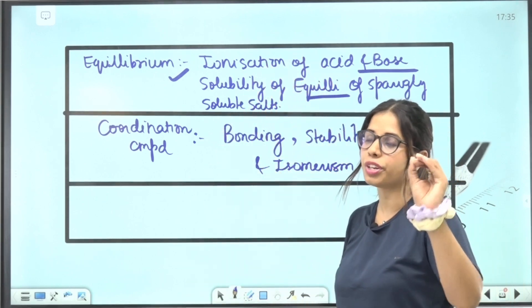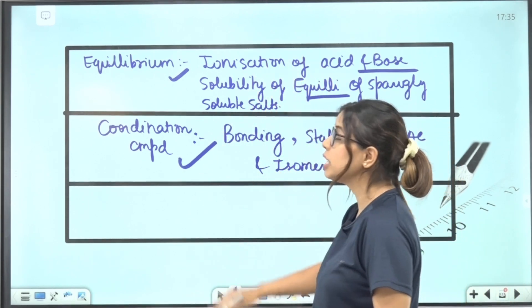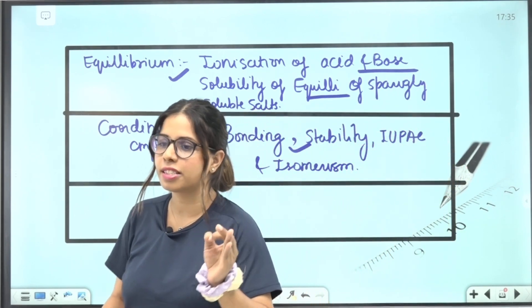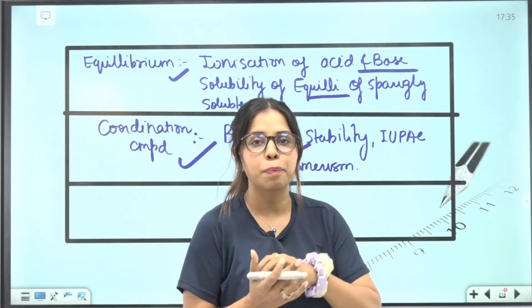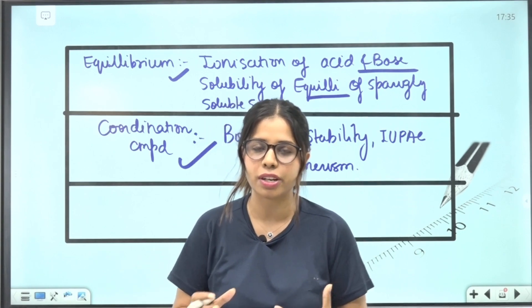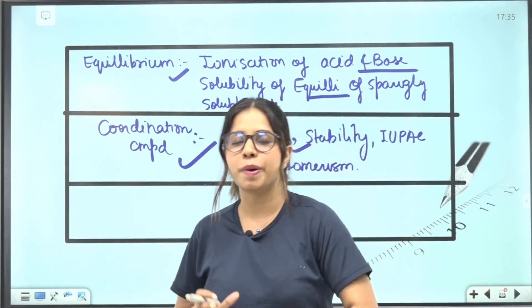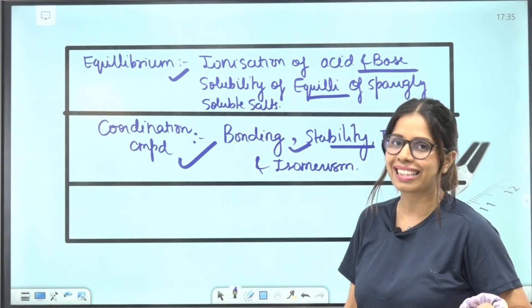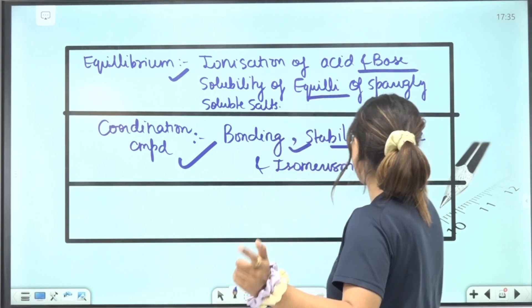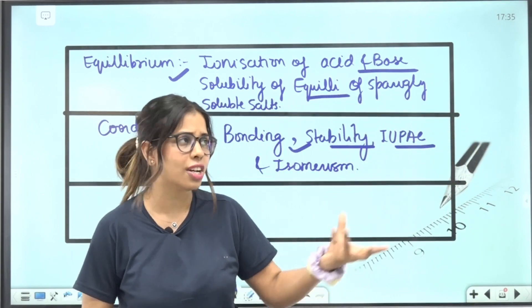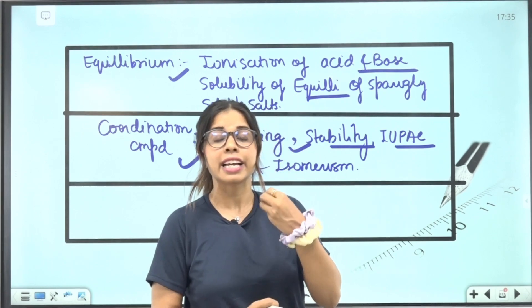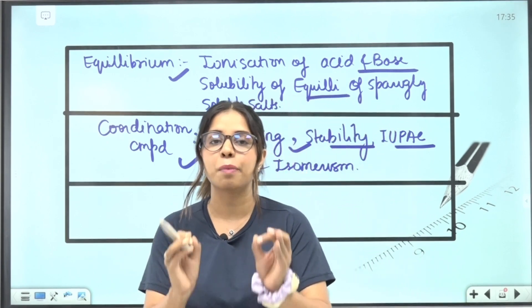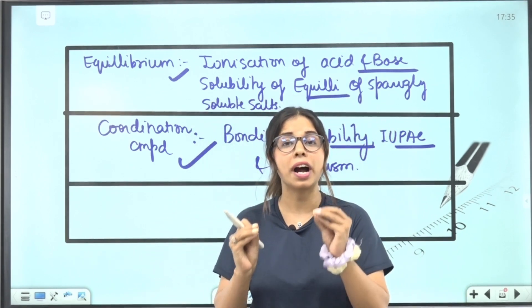Coordination Compound: In bonding, you need to know Crystal Field Theory, geometry, magnetic property, spin moment—all these things. Stability, how we predict, how chelation affects stability, and IUPAC nomenclature comes. Isomerism comes—how geometrical or optical isomers work. These questions in your NEET paper you will get to see 100%.